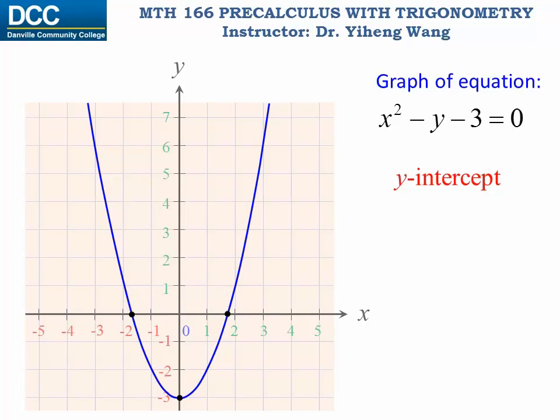For the y-intercept, since it is the point on the y-axis, it must have x coordinate of zero. So to determine that, we only need to set x to be zero and solve for y from the original equation.